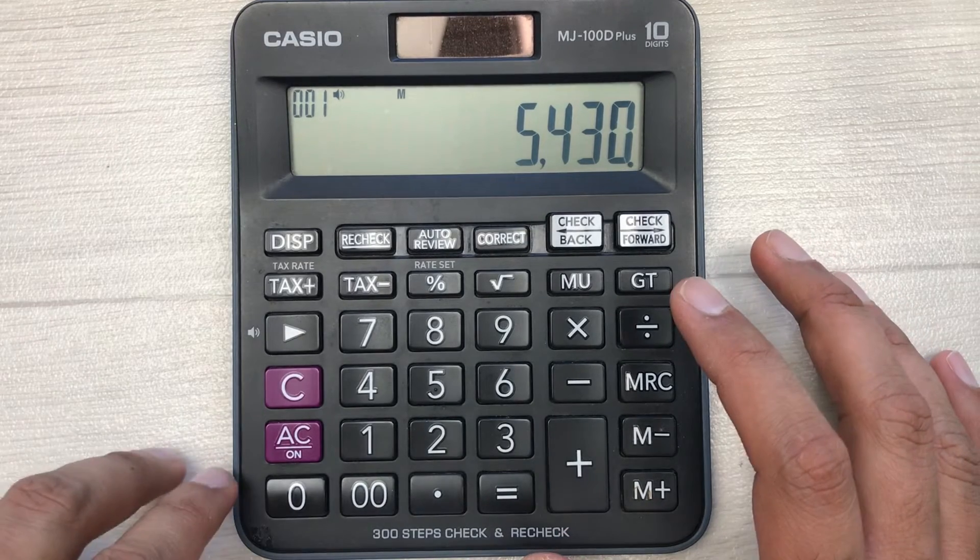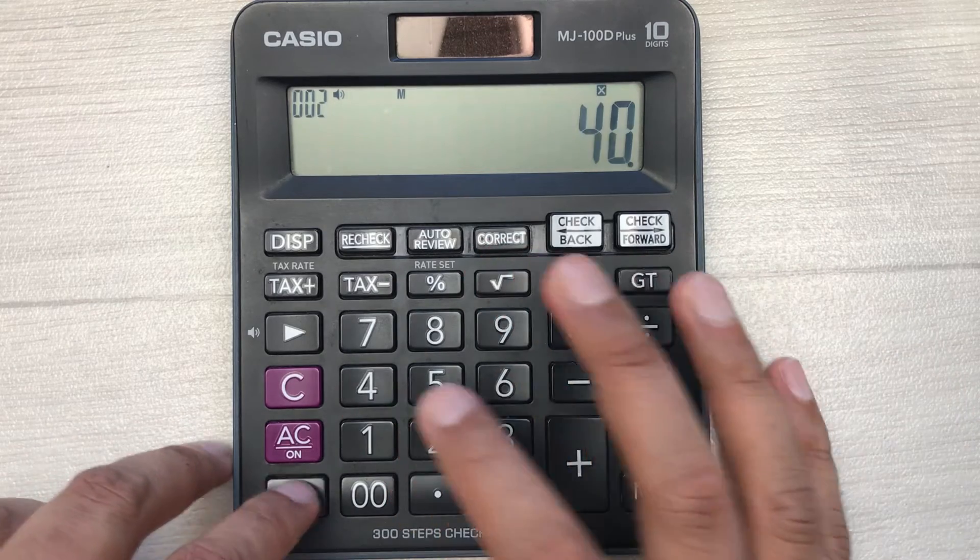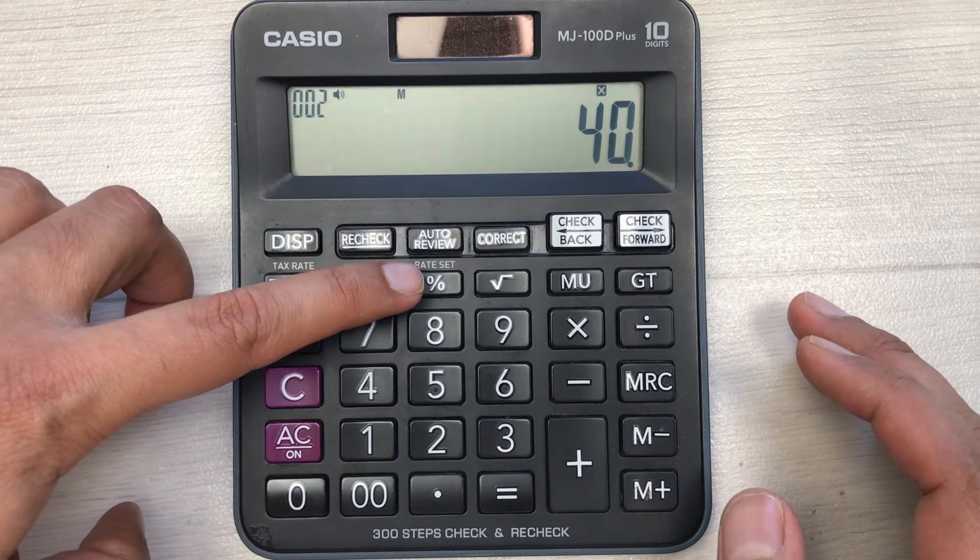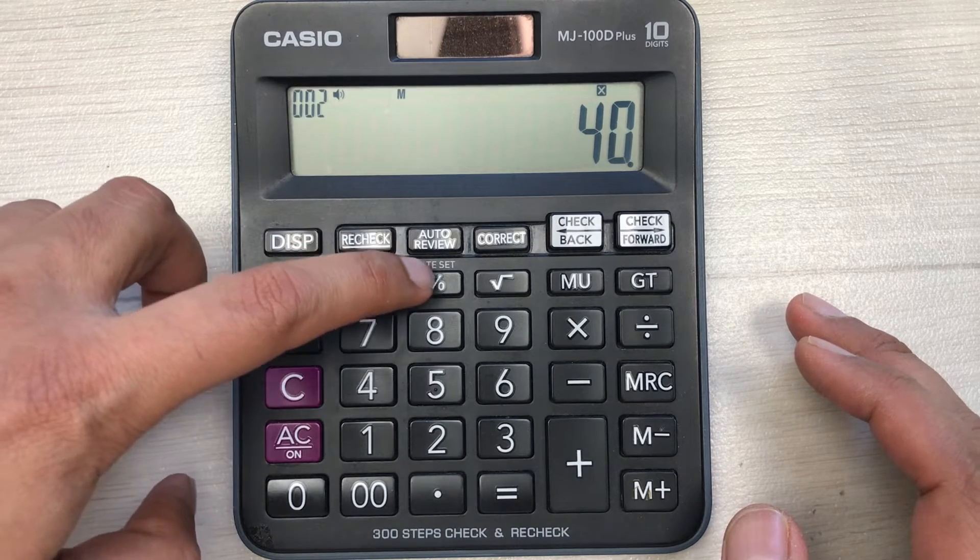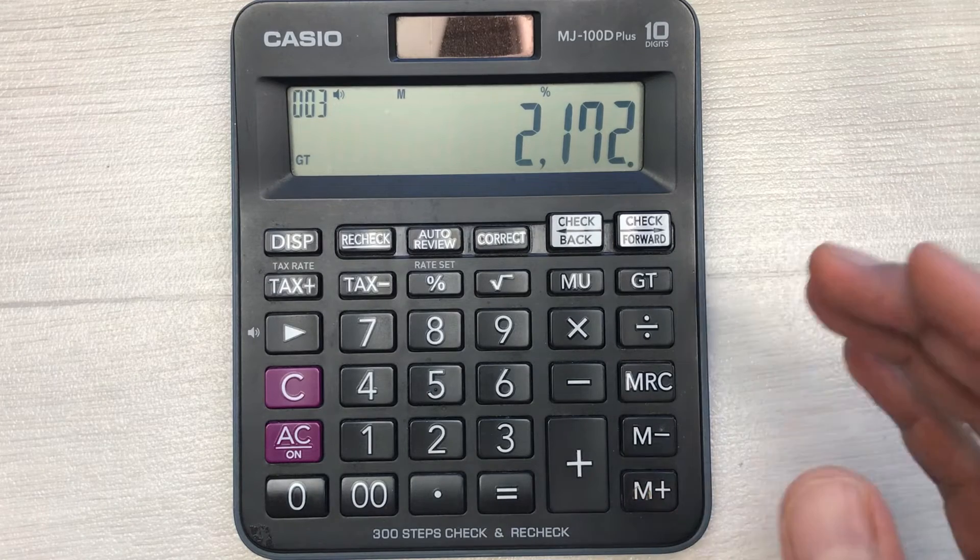First of all, you have to multiply it with 40. Then in the second step you have to press this percentage button. So here is the final answer. After 60% discount you have to pay 2172.